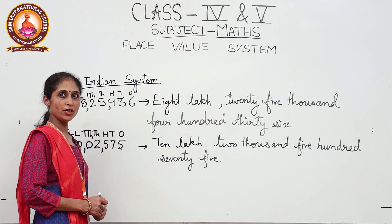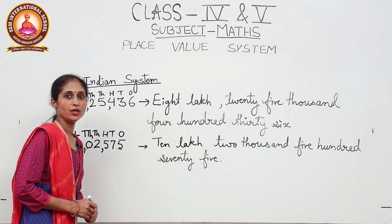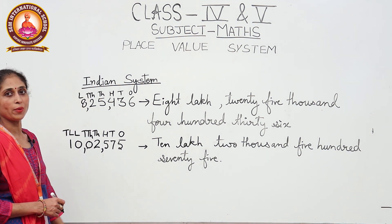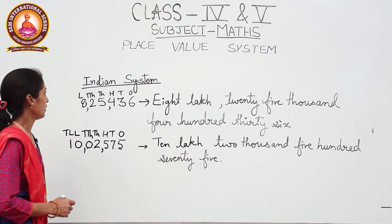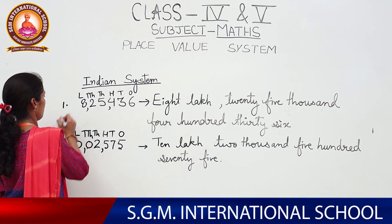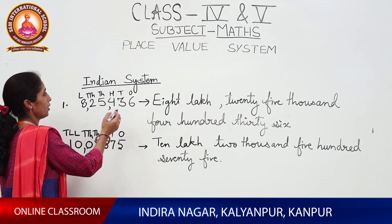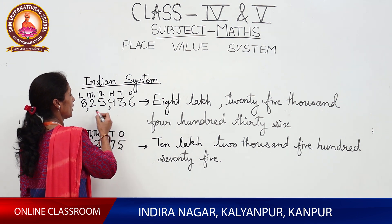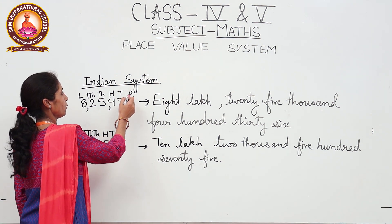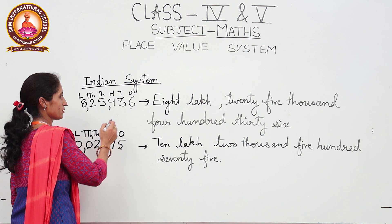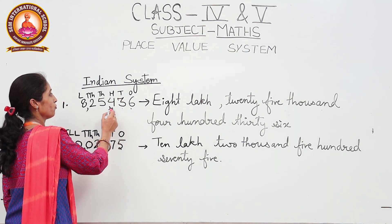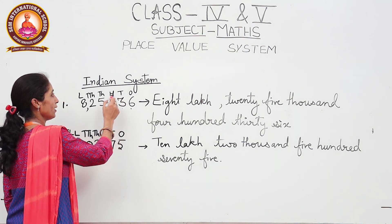So the Indian place value system has four periods and is divided into nine places. Let's learn with the help of an example how to write a given number in the form of a number name and how to put the commas. In this first example, six is at the ones place, three is at the tens place, and four is at the hundreds place.